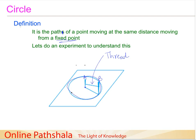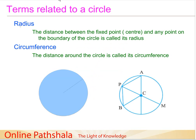What you get is a circle. The definition states that a circle is the path of a point moving at the same distance from a fixed point. In this case, we are moving at the same distance governed by the length of the thread, and stick A is the fixed point. The path traced here is the circle — this is the geometrical definition of a circle.